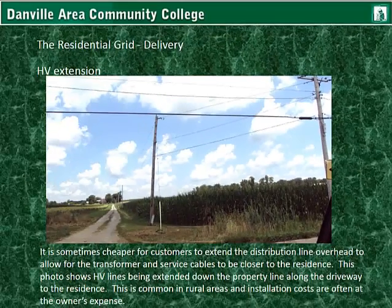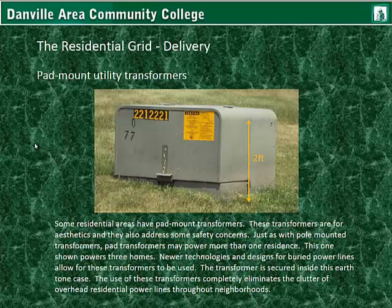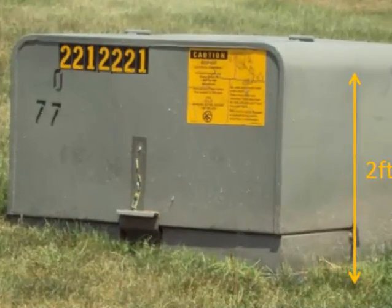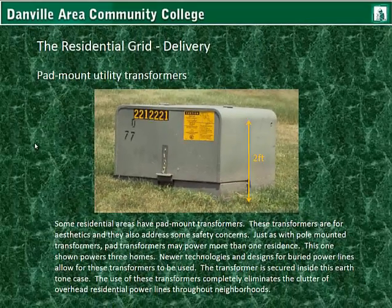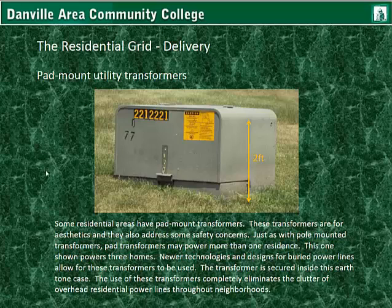Also, with this far of a run, you would get voltage losses if you tried to run a lower voltage cable all the way down to the home, so a transformer being located here wouldn't be an option. Pad mount utility transformers — some residential areas have pad mount transformers. These transformers are for aesthetics and they also address some safety concerns. Just as with pole mounted transformers, pad transformers may power more than one residence. This one shown powers three homes. Newer technologies allow for these transformers to be used with buried high voltage lines. The transformer is secured inside an earth tone case, completely eliminating the clutter of overhead residential power lines throughout neighborhoods.